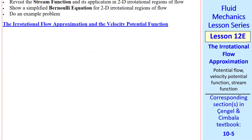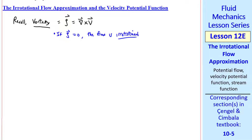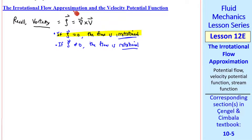What is irrotational flow? Recall that the vorticity, which is Greek letter zeta, is defined as the curl of v, or del cross v. If zeta equals zero, the flow is irrotational. If zeta is not equal to zero, the flow is rotational. In this lesson we're interested in irrotational flow — it's an approximation in most cases.